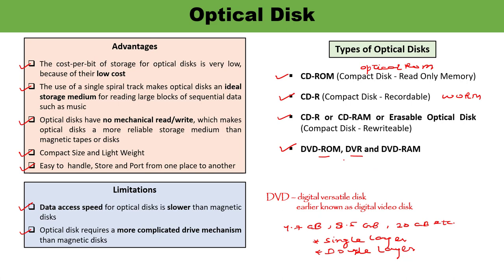DVR is recordable DVD, similar to a WORM disk. The user can write data to DVR only once, and it can be read as many times as required. Writing is done with the help of a semiconductor mechanism, and stored data can be read multiple times. DVD-RAM uses a technology known as phase change to read data from or write data into the disk.